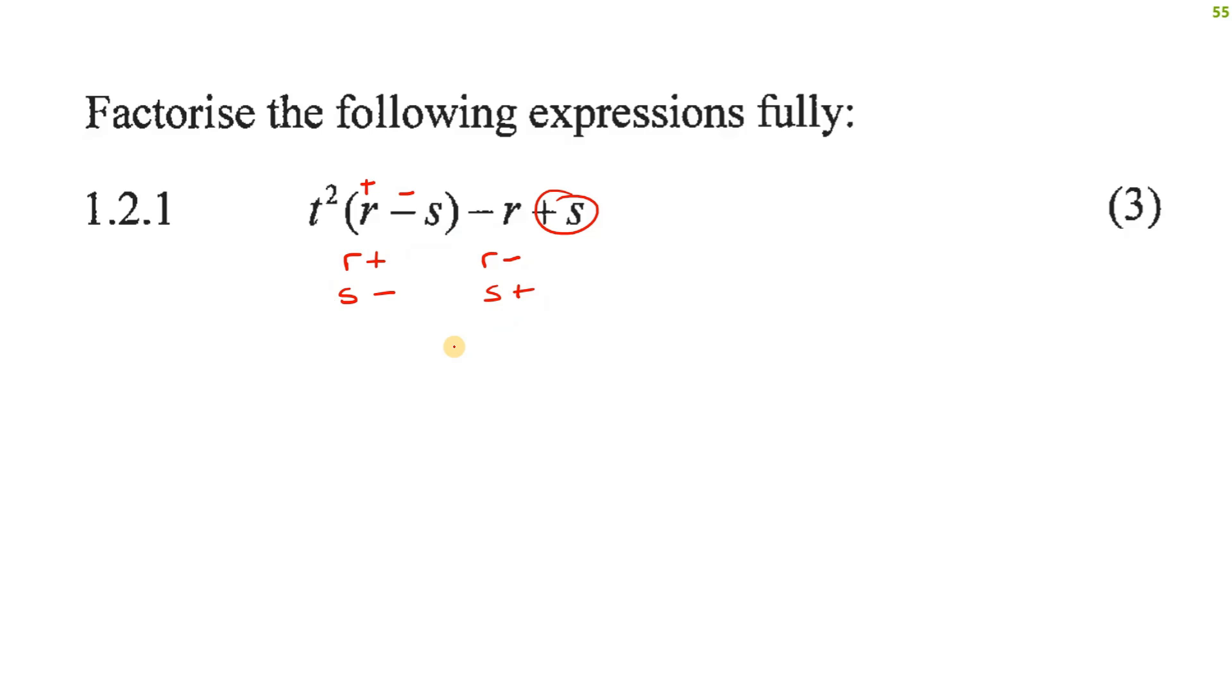When that happens, I want you to smile because that's actually easy to fix. All that we do is the following. So we leave that one. Now, we're just going to change the signs of these ones. So we're going to take out a negative as a common factor. So we're going to take out a negative one as a common factor. And then I'm going to say R minus S.